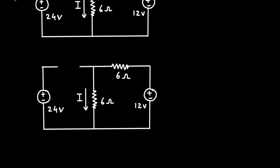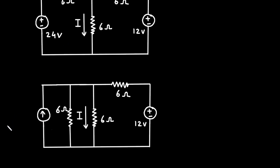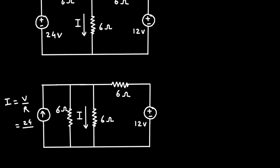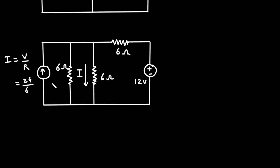This 6 ohm series converts into parallel, so here this 6 ohm is now in parallel. The positive sign is on the upside and the negative sign is on the downside, so the direction of current will be upward. This 24 volt will change to a current source. To convert from voltage to current we use the formula I = V/R. The value of voltage is 24 and the resistance in series is 6, so 24 divided by 6 gives 4 ampere.